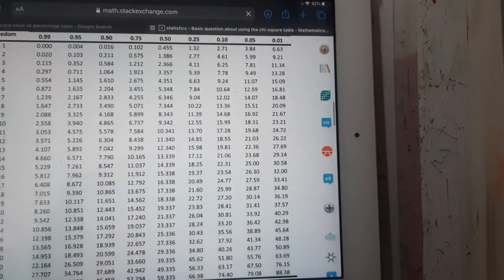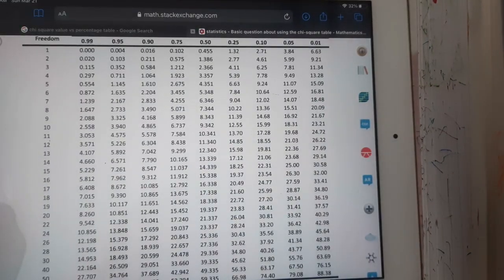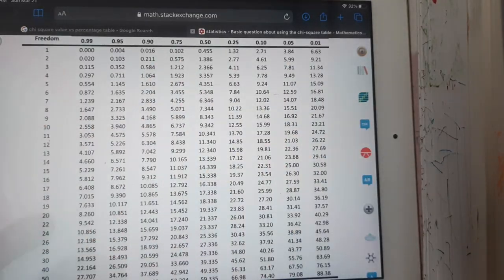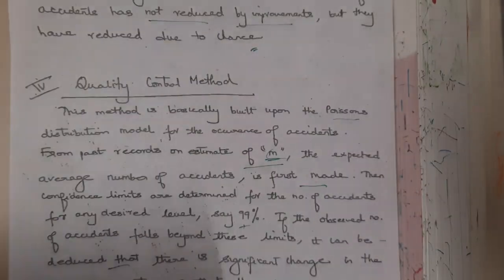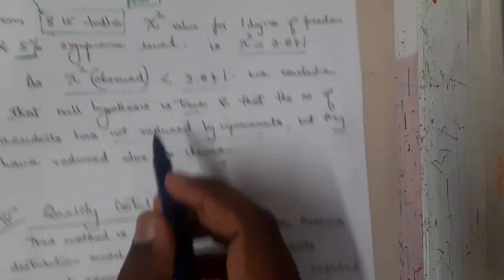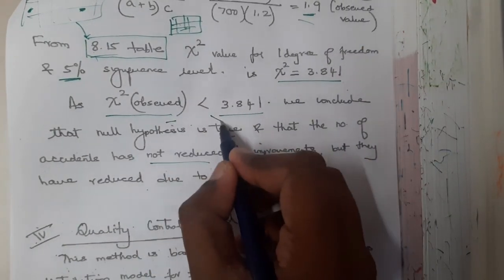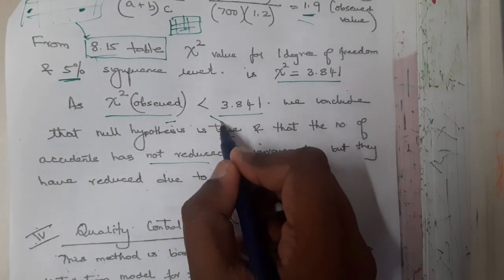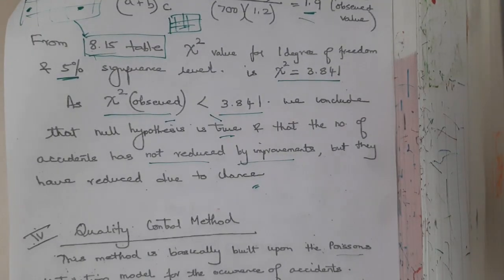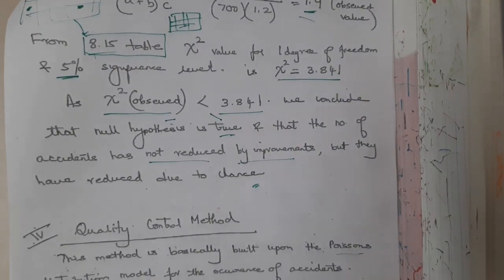The table is now clearer. You write the values and check: the only condition to remember is that if our observed value is less and the table value is greater, then the hypothesis is true and there is no reduction or improvement.